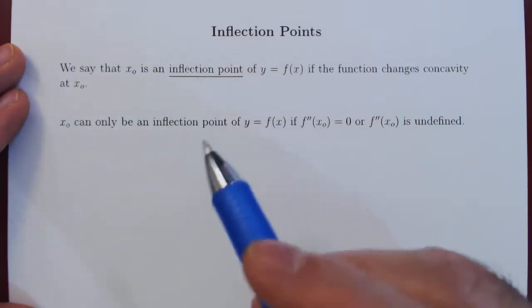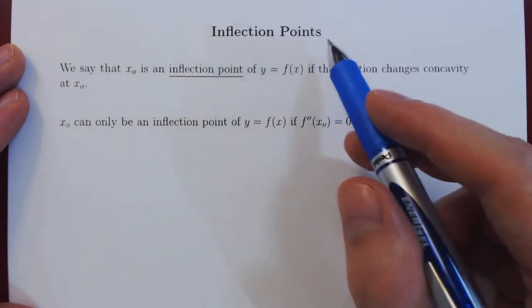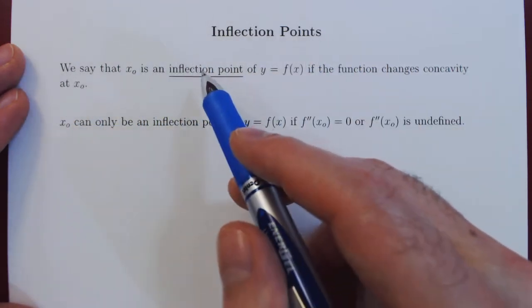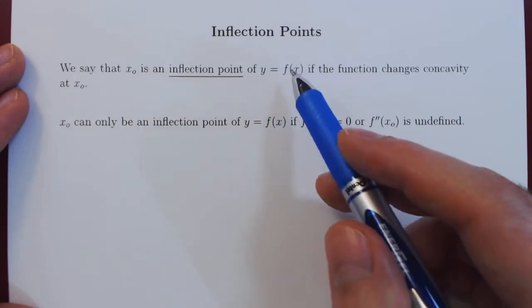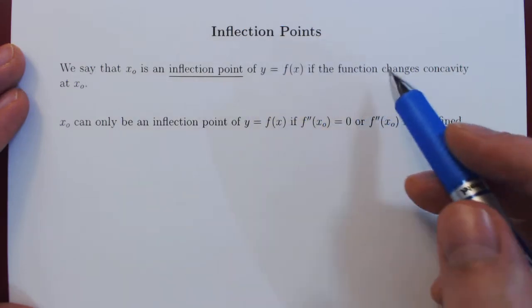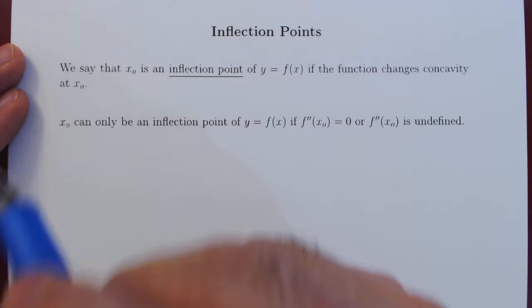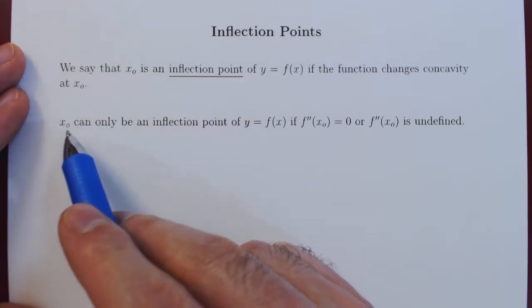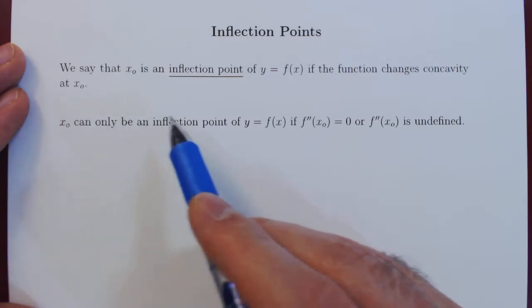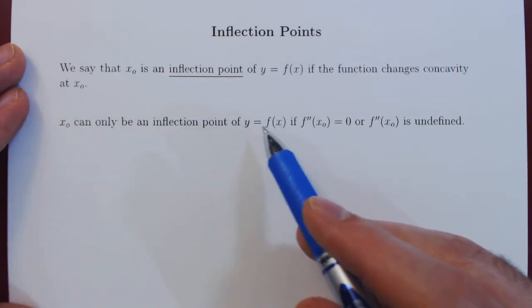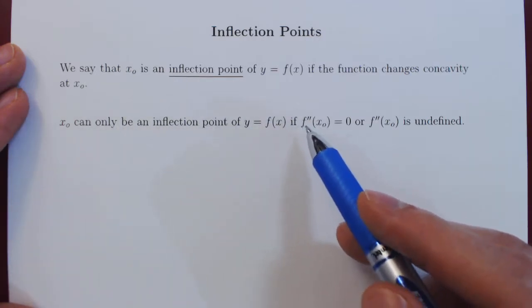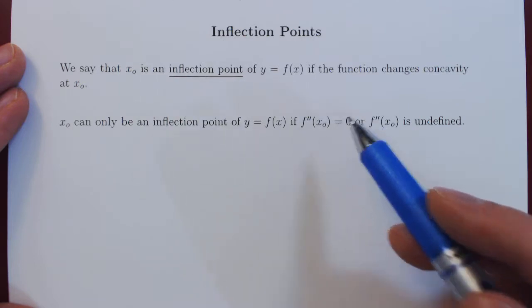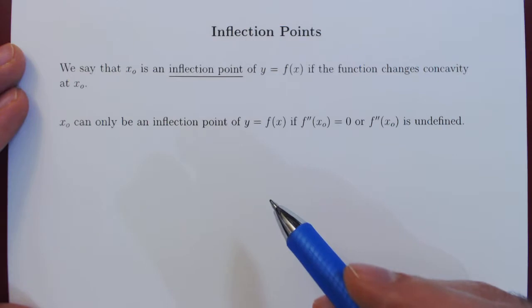In this video, we will introduce the notion of inflection points. We say that x0 is an inflection point of the function y equals f of x if the function changes concavity at this point. And x0 can only be an inflection point of the function f of x if the second derivative of the function at x0 is either equal to 0 or is undefined.